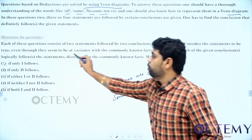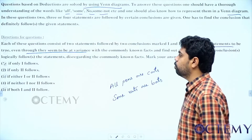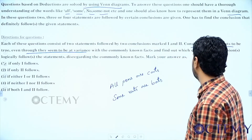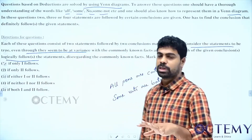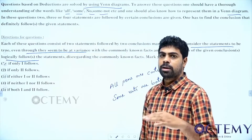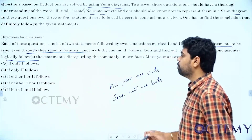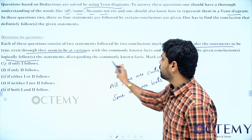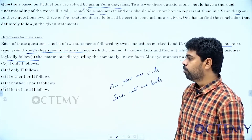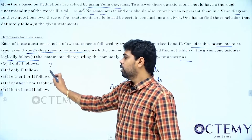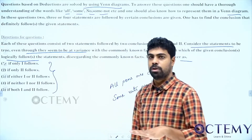Whatever is given in the question is true — you should assume that. Then only you can solve this. Consider the statements to be true even though they seem to be at variance with commonly known facts, and find out which conclusion logically follows. Sometimes you might be asked which does not follow also. Generally in other competitive exams that is asked too. But here we are seeing which follows. Mark your answers as: one follows, two follows, neither one nor two follows, or both follow.